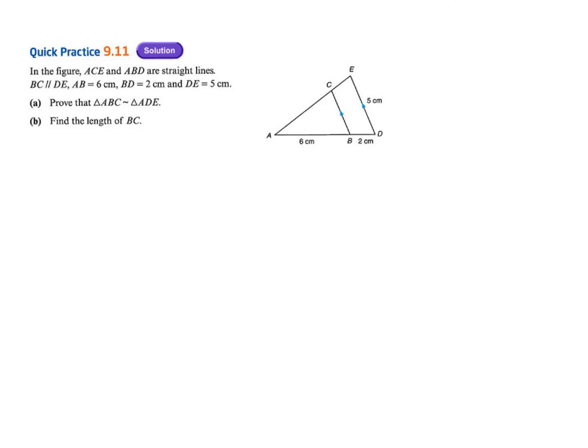So in the figure, we have points A, C, E and a line. BC is parallel to DE. AB equals 6 cm, BD equals 2 cm, and DE equals 5 cm. The whole diagram is given for you.